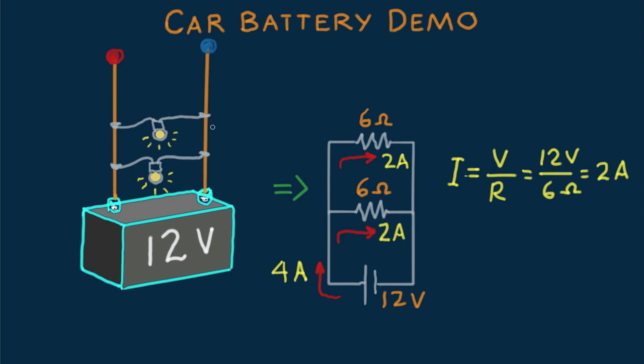The branches don't know each other. Charge flows through one or the other. It doesn't flow through each, as occurs in a series circuit.